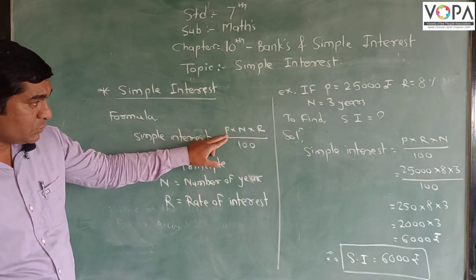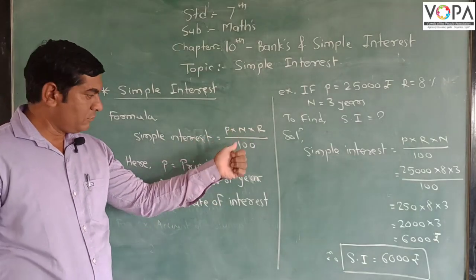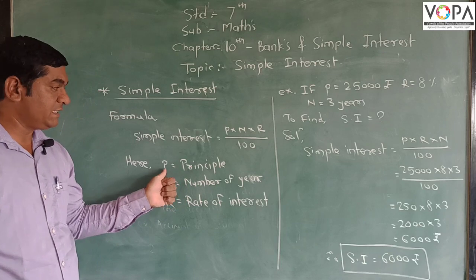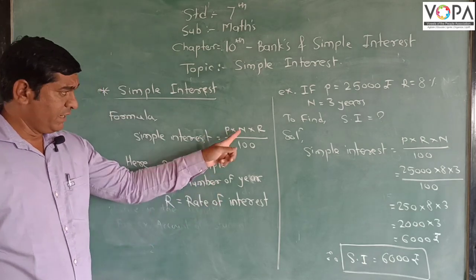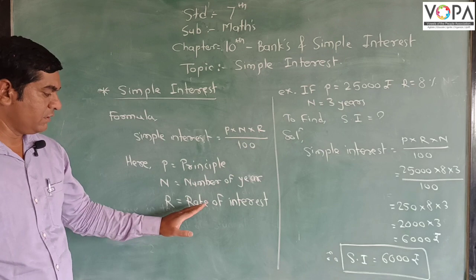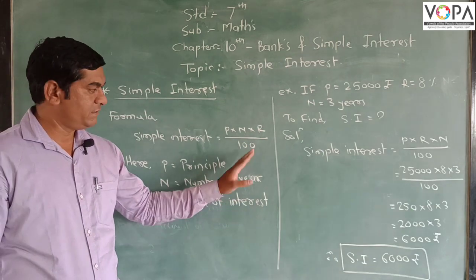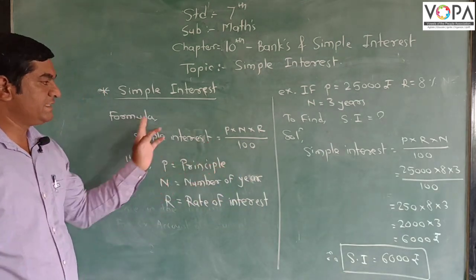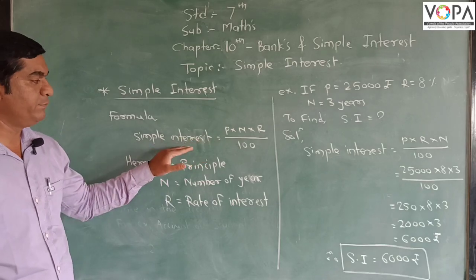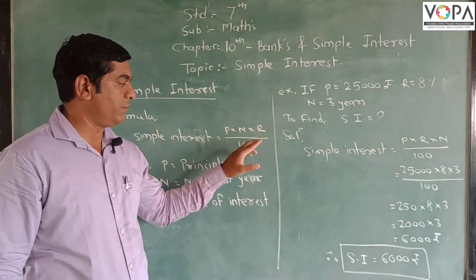The terms P N R are related to this: P stands for Principal, A is number of years, and R is rate of interest. So this is the basic formula to find Simple Interest: P into A into R upon 100.